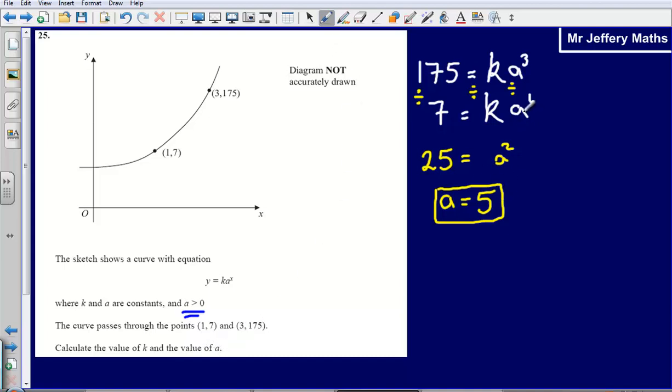Now we've got one of our values, we can figure out the other one. Let's substitute a back into one of these equations. Let's choose 7 equals ka because it just makes it a bit easier than dealing with bigger numbers. So we can say that 7 is equal to k multiplied by 5, which I'm just going to write as 5k, and so that means that k is going to be 7 divided by 5, which means that k is equal to 1.4. So my final answer here would be a is equal to 5 and k is equal to 1.4.